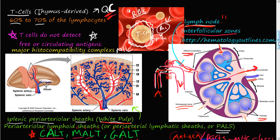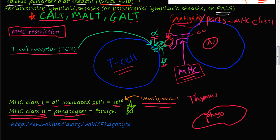Let's move on to a concept called major histocompatibility complex restriction, or MHC. MHC restriction means your body uses these major histocompatibility complexes to distinguish self from foreign. There are two types: class 1 and class 2.